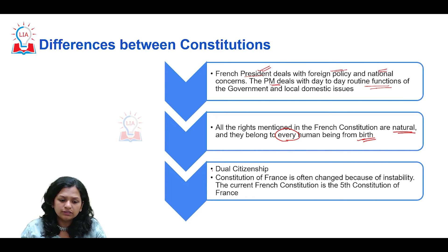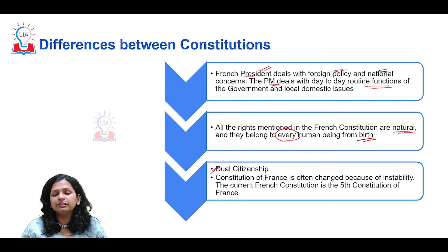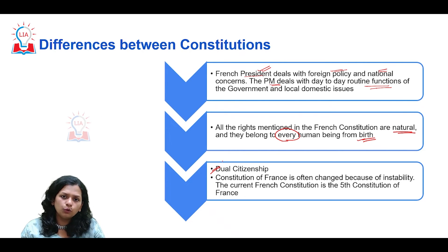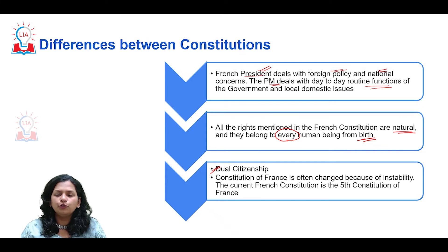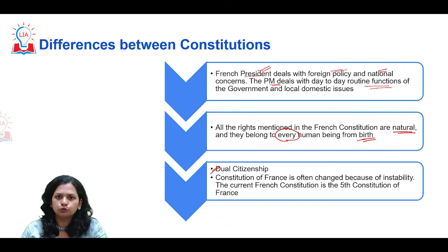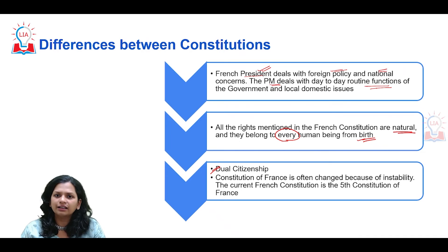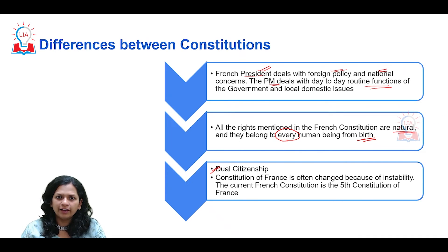One very important difference is that dual citizenship is present in the French constitution, whereas India is known for single citizenship. India's approach promotes fraternity and brotherhood without region-based citizenship — it is essentially allegiance to the entire country with one unified identity.